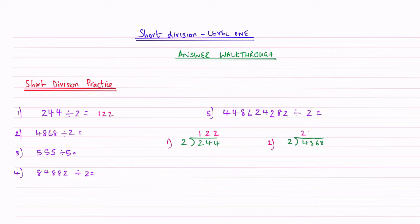How many 2's going to 8? This is 4. How many 2's going to 6? This is 3. Then how many 2's going to 8? The answer is 4. My answer for question 2 is 2,434.